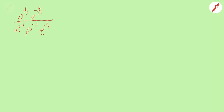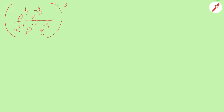This fraction has parentheses around it and it is being raised to the negative 3rd power. There are a couple of ways I could work this, but notice that all of the powers on the fraction are negative and the exponent on the outside of the parentheses is negative. Remember that if we multiply negative times negative we get positive. I propose to distribute the negative 3 on the outside of the parentheses to all of the powers on the inside of the parentheses.